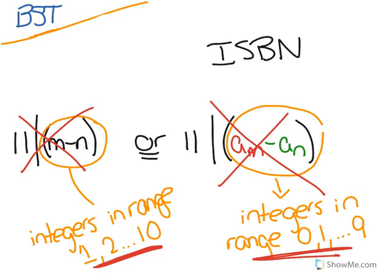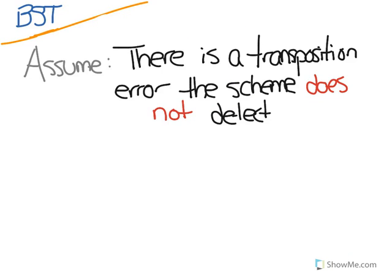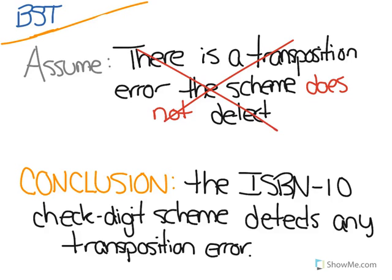Because neither of these conditions can be true, we have reached a contradiction. This means that our assumption that there is a transposition error that the check digit scheme for ISBN-10 numbers does not detect is false, because we found a contradiction. And so we conclude that the ISBN-10 check digit scheme detects any transposition error, and we proved this using proof by contradiction.